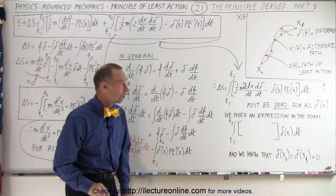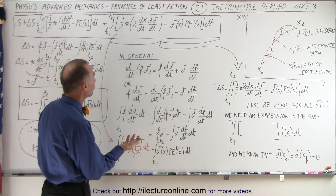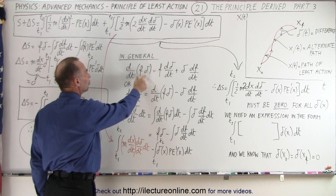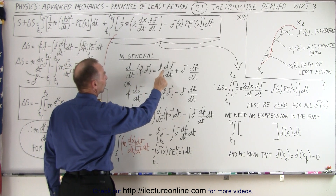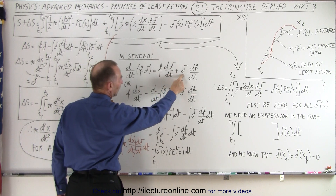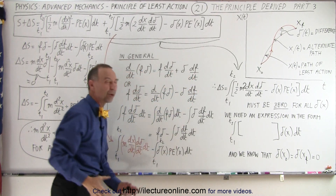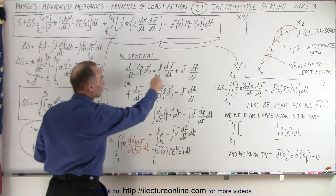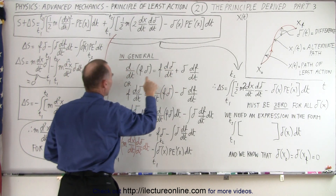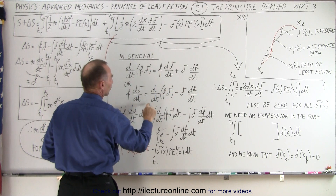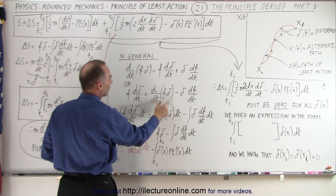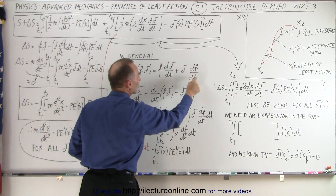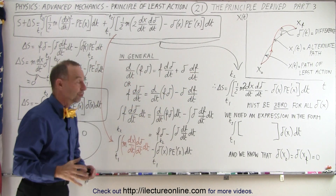We need a few mathematical tricks to do that. The first trick is the product rule: the derivative of two functions equals the first times the derivative of the second, plus the second times the derivative of the first. We take one term, write it in the front, and move the other term to the other side — giving us d/dt of the product of the two functions, minus delta times the derivative of the second function with respect to time.